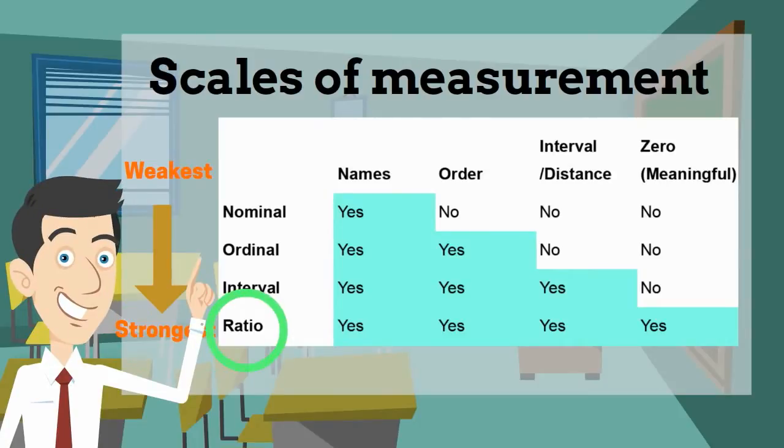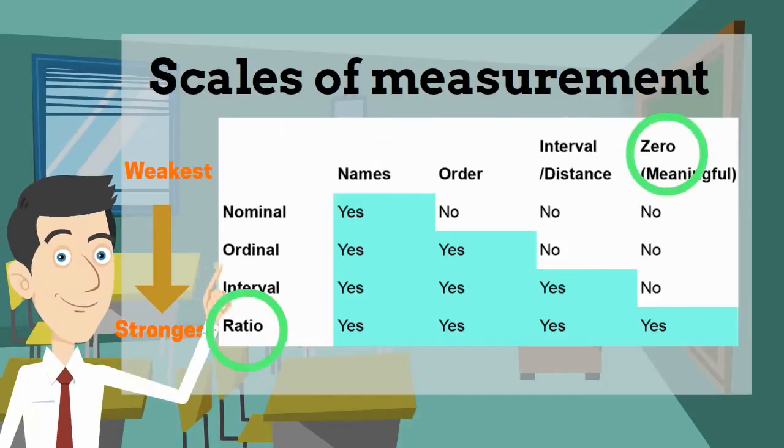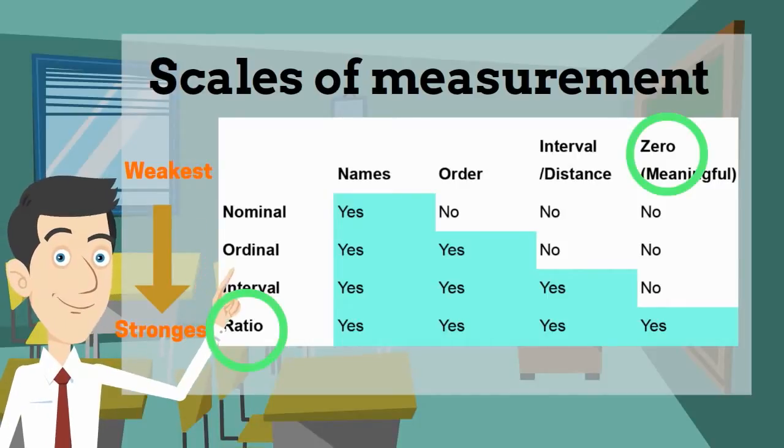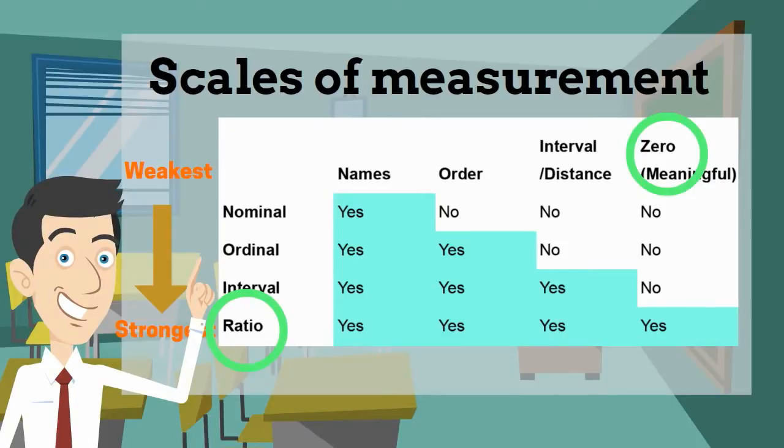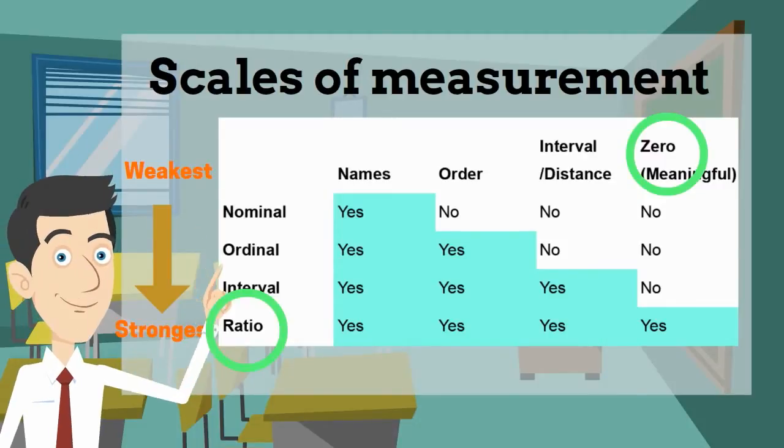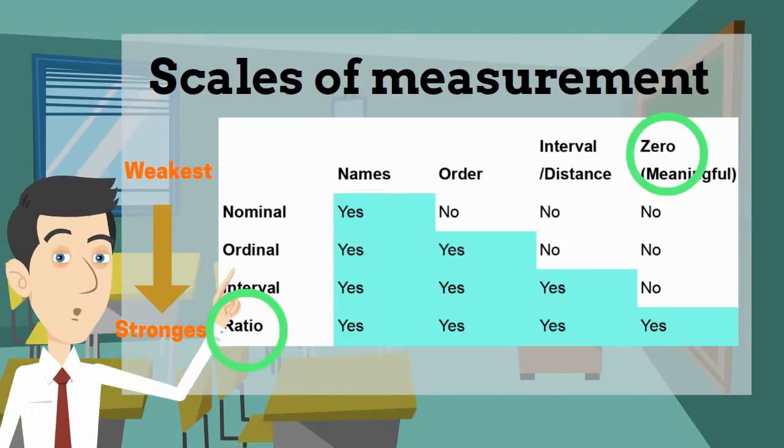Finally, we have ratio. Ratio is the highest level of the measurement scale. It has all the characteristics of interval, but it also has a meaningful zero. So the easiest way to memorize this would be: zero - you think about a meaningful zero, then that's the ratio measurement. What kind of examples do we have for this? Examples for ratio is everything basically. You've got like distance, age, money - yeah, you name it.